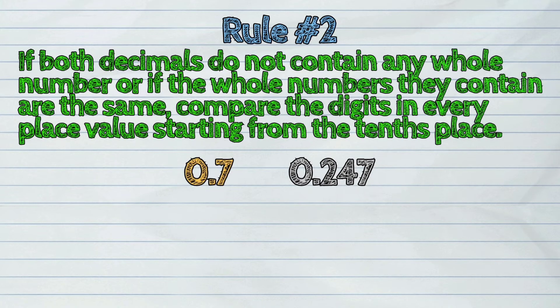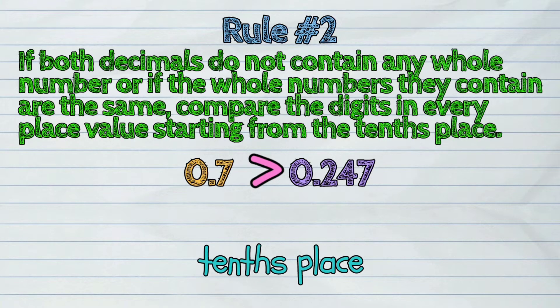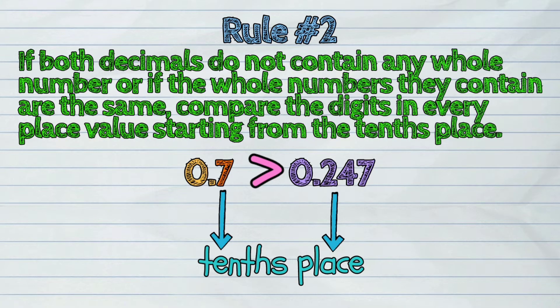0.7 is greater than 0.247 because we should compare first the value in the tenths place which are 7 and 2. 7 is greater than 2. Another example.